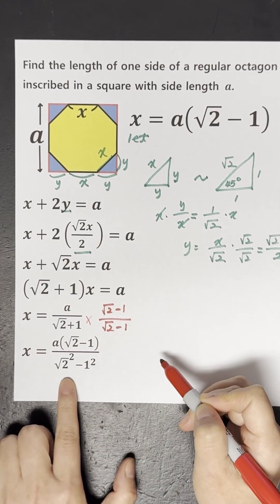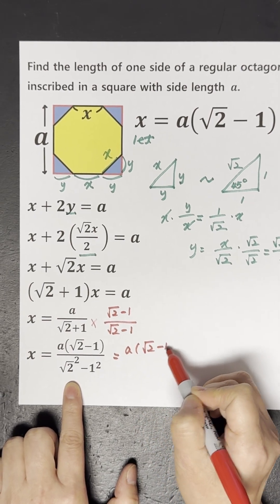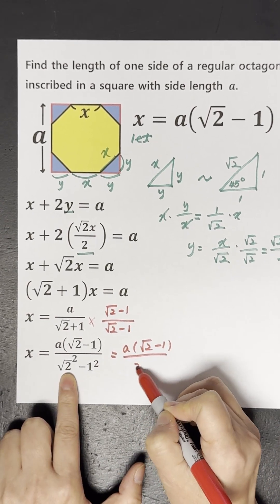To find that X equals A square root 2 minus 1 over 2 minus 1.